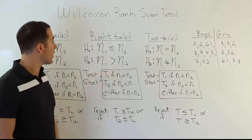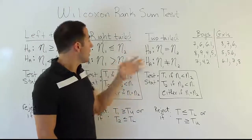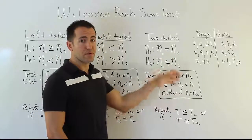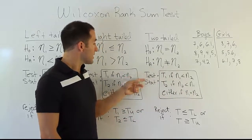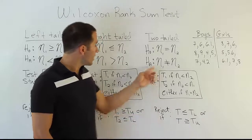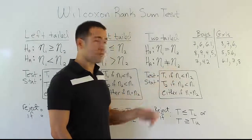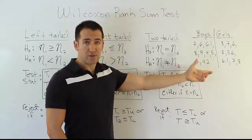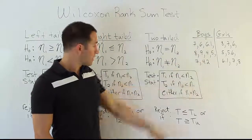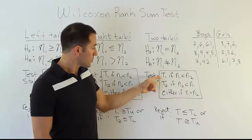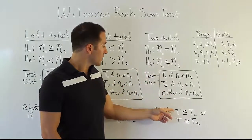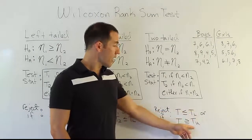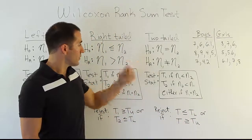Finally, the two-tailed scenario: H0 says the two medians are the same, while HA says they're just different from one another — either the boys' is smaller or the girls' is smaller. Same rule for the test stat. We reject H0 if we can show something extreme: either the rank total is very small or very large. So either it needs to be less than the lower critical value or higher than the upper critical value. If that's the case, you can reject H0 and support HA.